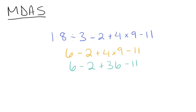And from here, we're going to simplify addition and subtraction in order from left to right. So we're going to start by subtracting 2 from 6 to get 4 plus 36 minus 11. Then we're going to add 4 and 36, which is 40. So we'll have 40 minus 11. And finally, we subtract 11 from 40, which gives us our final answer of 29.